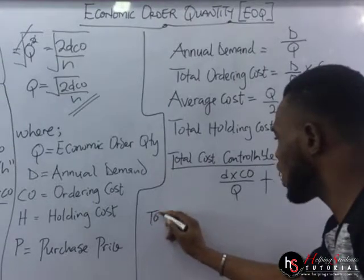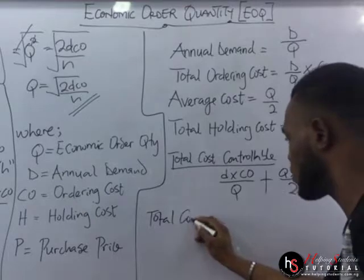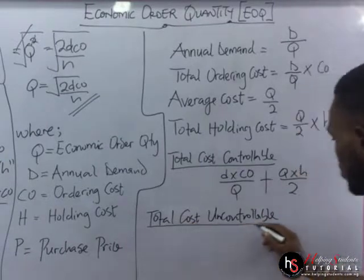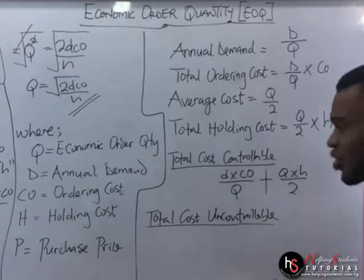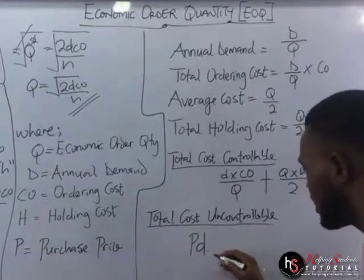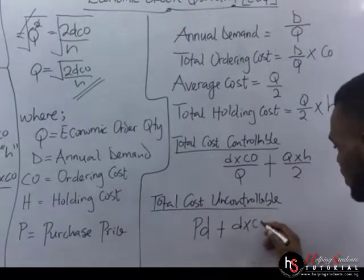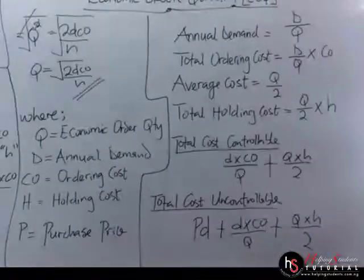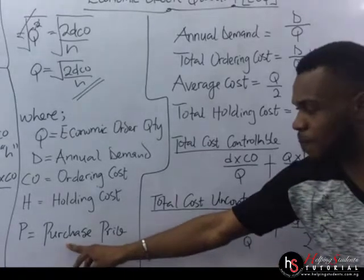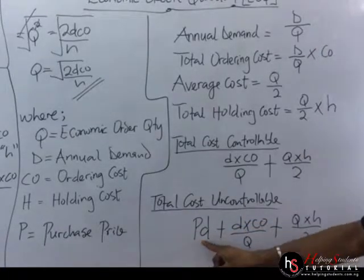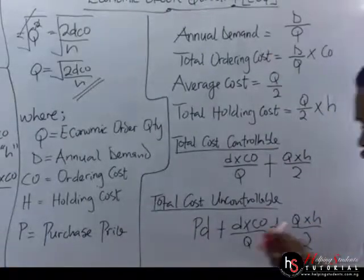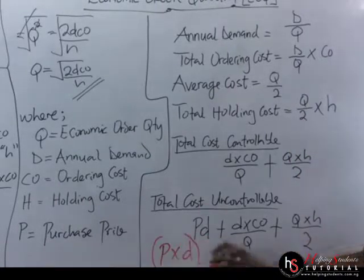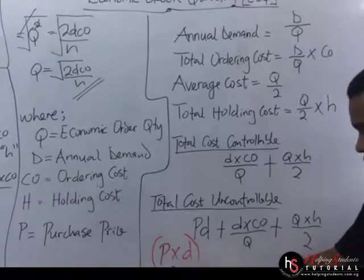Then we have the total inventory costs, or total costs uncontrollable. For the total cost uncontrollable, it is the same thing but with a little difference: PD plus D times CO over Q plus Q times H over 2. Here P signifies the purchase price and D signifies the annual demand, so PD means P times D — the purchase price times the demand.